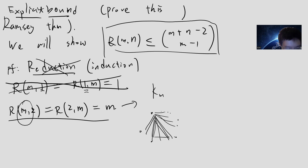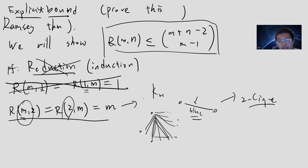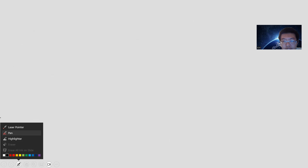There must be a blue edge somewhere. So that's a two-clique. Either they are all red - giving a red K_M clique - or there is at least one blue edge, producing a two-blue clique. So we have the foundation and the lower bound. We just need induction on one coordinate.